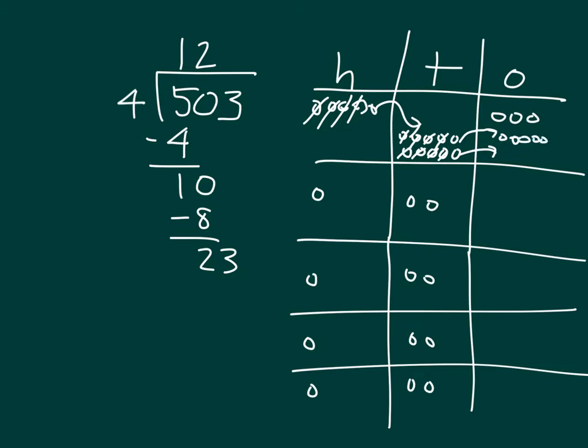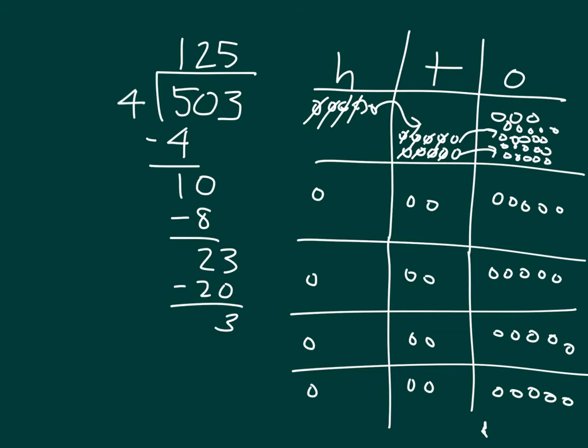So we end up with twenty-three ones here that we are dividing by four. And when we do that, we end up having five within each of those groups with the remainder of three. And that's why we take that last step there to be able to work that out. And just as our standard algorithm shows, and our place value chart, we do have that same answer there.